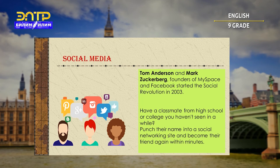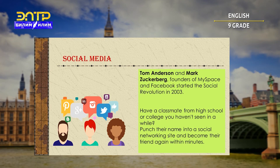A social network service consists of a representation of each user — often a profile — their social links, and a variety of additional services. Most social network services are web-based and provide means for users to interact over the Internet, such as Facebook, Twitter, Gmail, and so on.